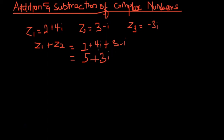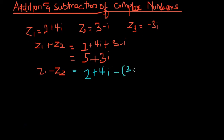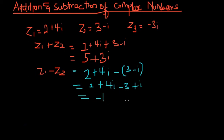Now let's do subtraction. We have z1 minus z2. You have to be very careful when it comes to subtraction. We have two plus four i, minus open bracket three minus i, close bracket. Distributing the negative: two plus four i minus three plus i. This gives us negative one for the real part and five i for the imaginary part.